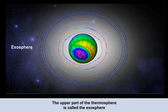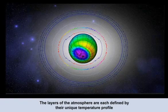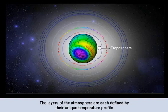The upper part of the thermosphere is known as the exosphere, starting at about 700 kilometres above the Earth's surface and being highly tenuous and undefined. All the layers we have analyzed have been defined by their unique temperature profiles. However, most of our flying and weather is contained within the first two layers of the atmosphere — namely the troposphere and the stratosphere.